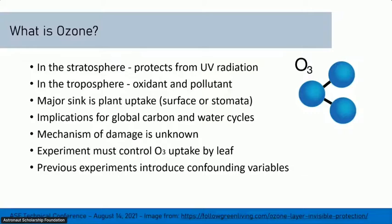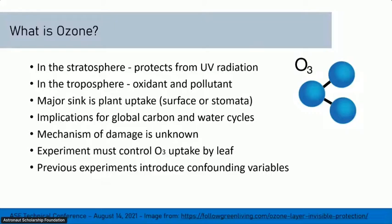To determine what this mechanism is, an experiment must be able to successfully control the amount of ozone taken up by the leaf. To do that, you have to control the stomata — the pores on the underside of the leaf — making them more open or more closed to get more or less ozone into the plant. Experiments have done this before, for example by limiting light availability or inducing drought stress to cause the stomata to dilate. But by changing light or water availability, that influences other aspects of the plant's metabolism and introduces confounding variables. My method seeks to do this without any confounding variables.